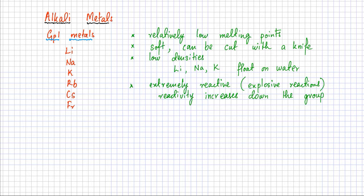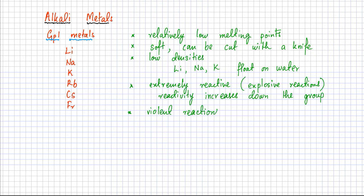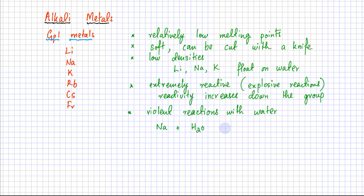Reactivity increases down the group. This brings us to the fifth point: since alkali metals are reactive and their reactions are explosive, if you react them with water they have very violent reactions. For example, if you react Na with H₂O, they produce NaOH plus hydrogen gas. This general reaction applies to all alkali metals — the metal reacts with water, a hydroxide is produced, and hydrogen gas is released.